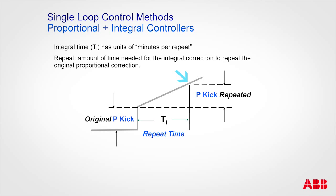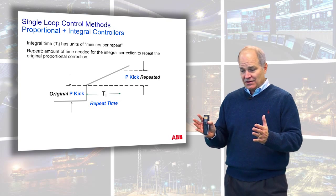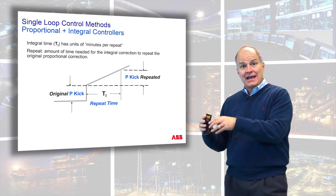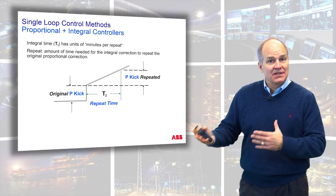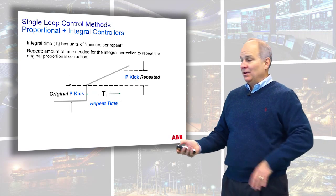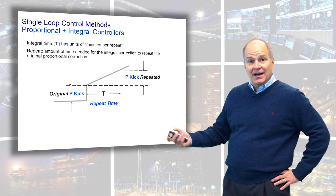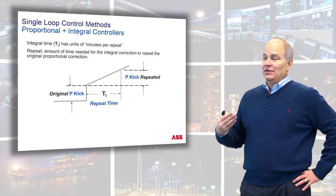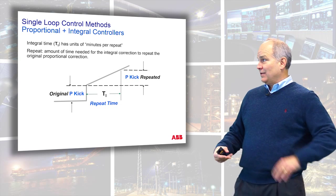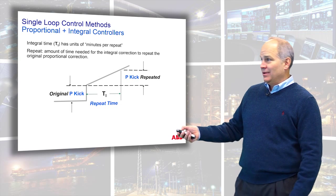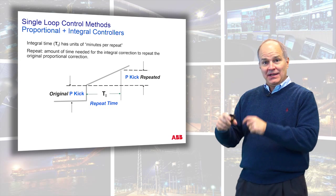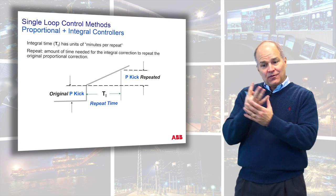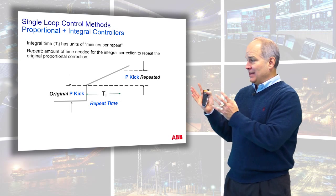That's called the repeat time or reset time - you're not resetting anything, it's just a measure of time until the integral has added up to the original proportional kick. Depending on the vendor, they'll give you integral time in seconds, in minutes, or a gain which is the slope - in repeats per minute or repeats per second. There are four different representations.